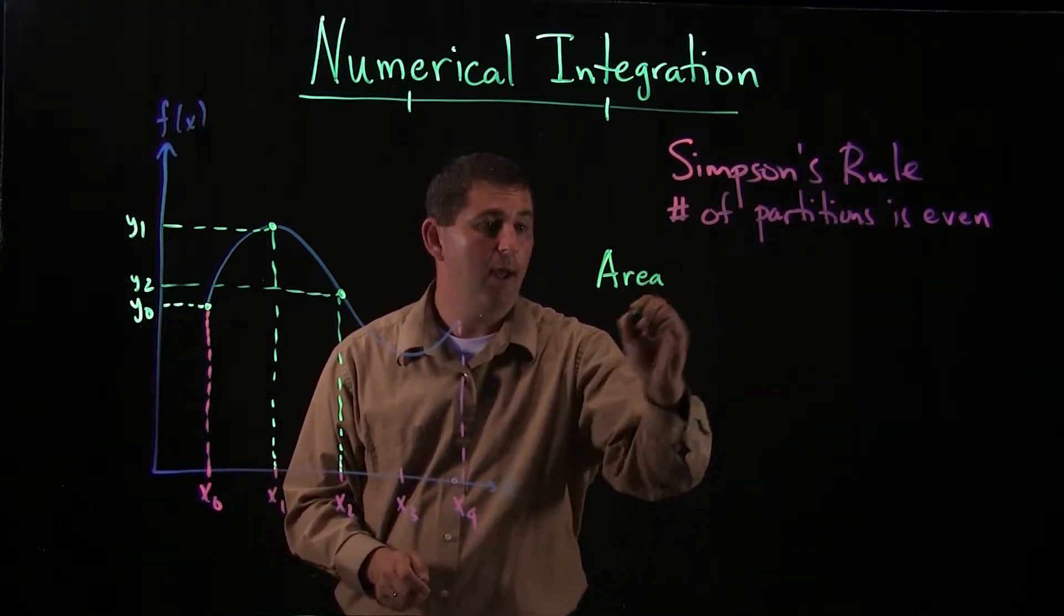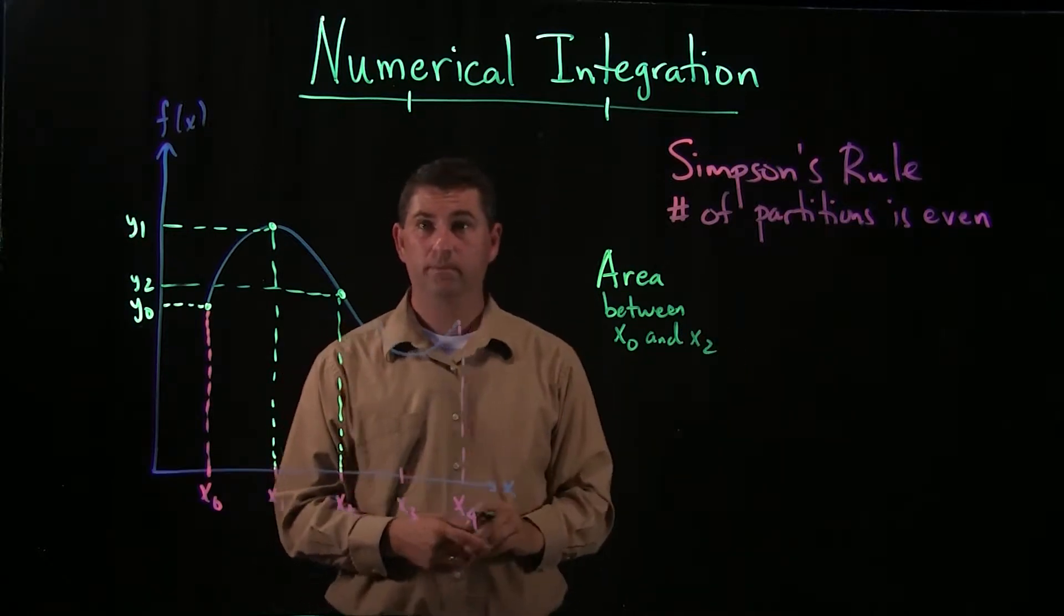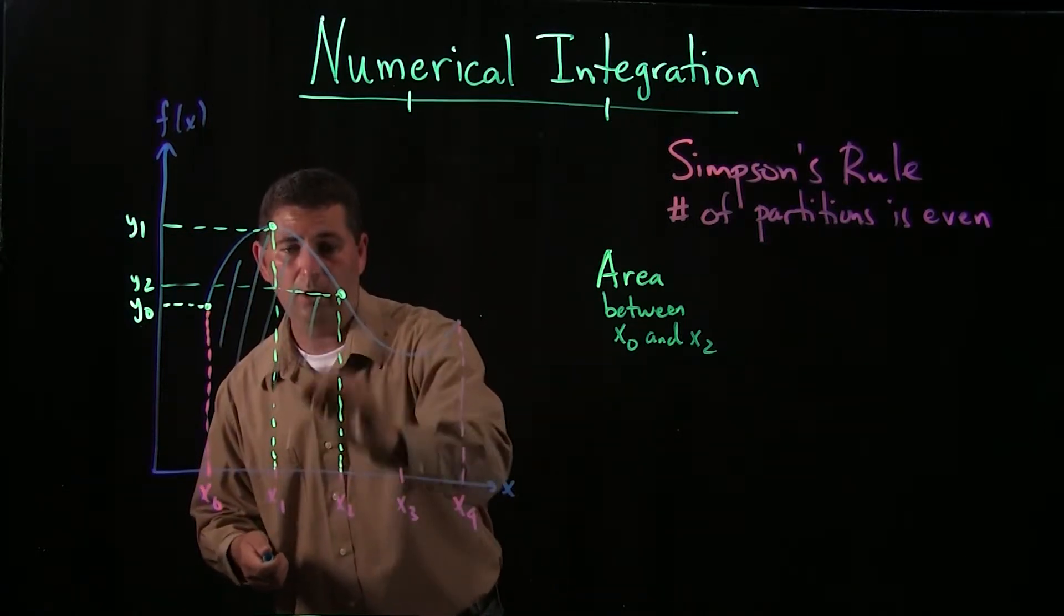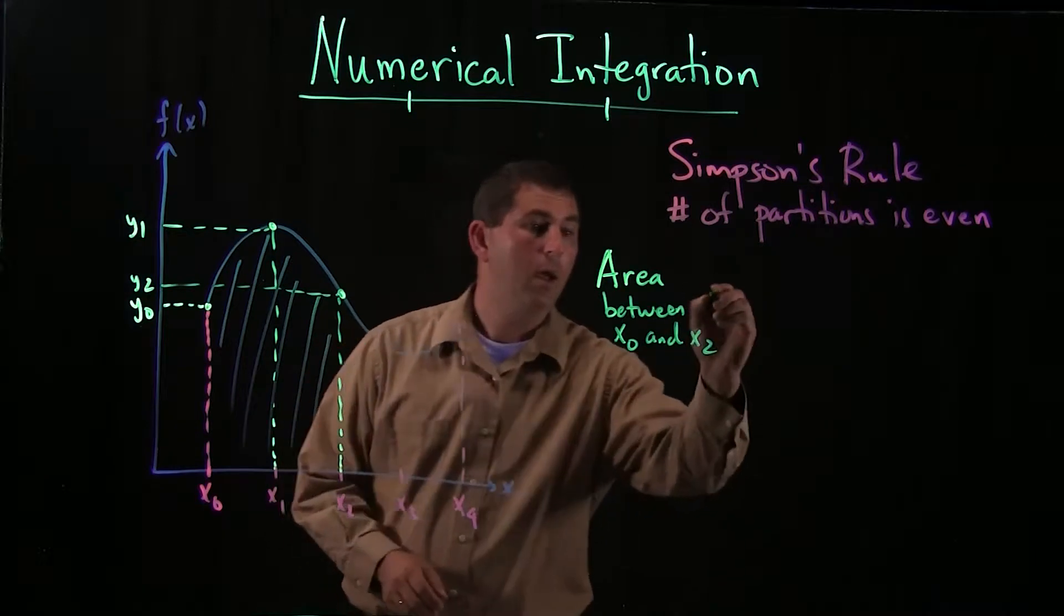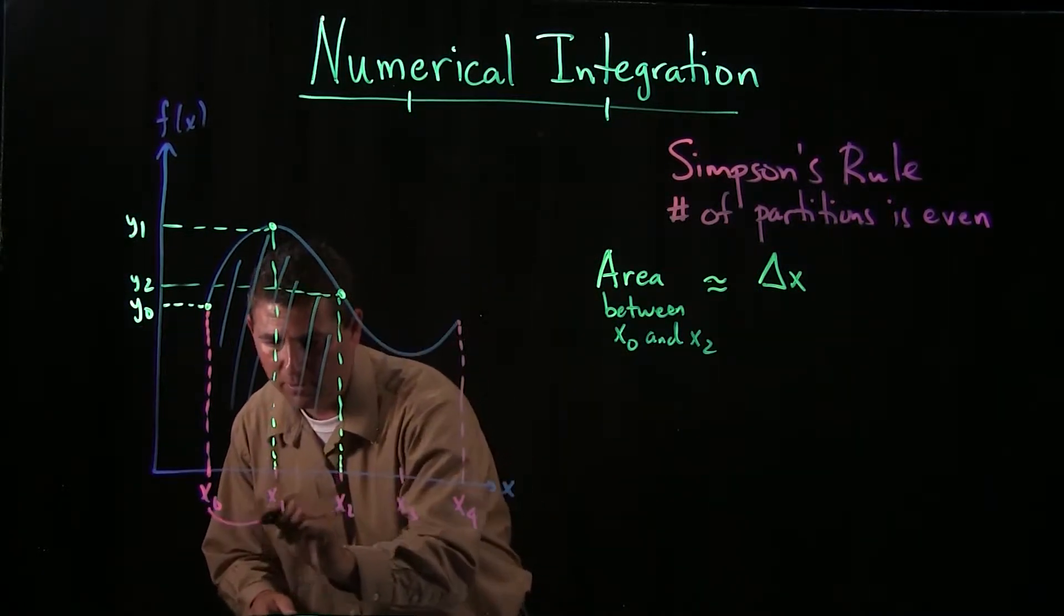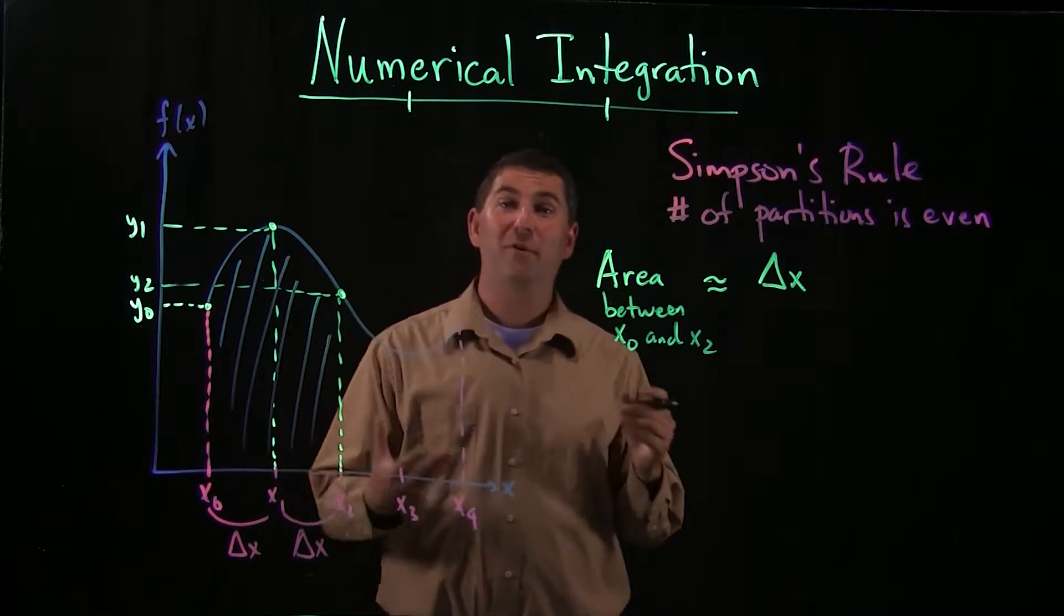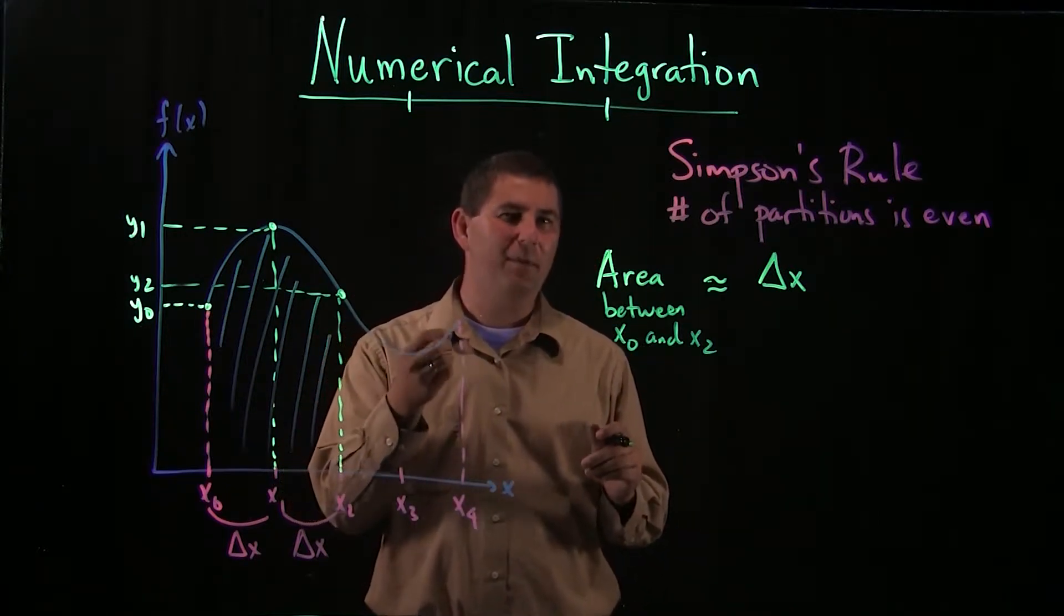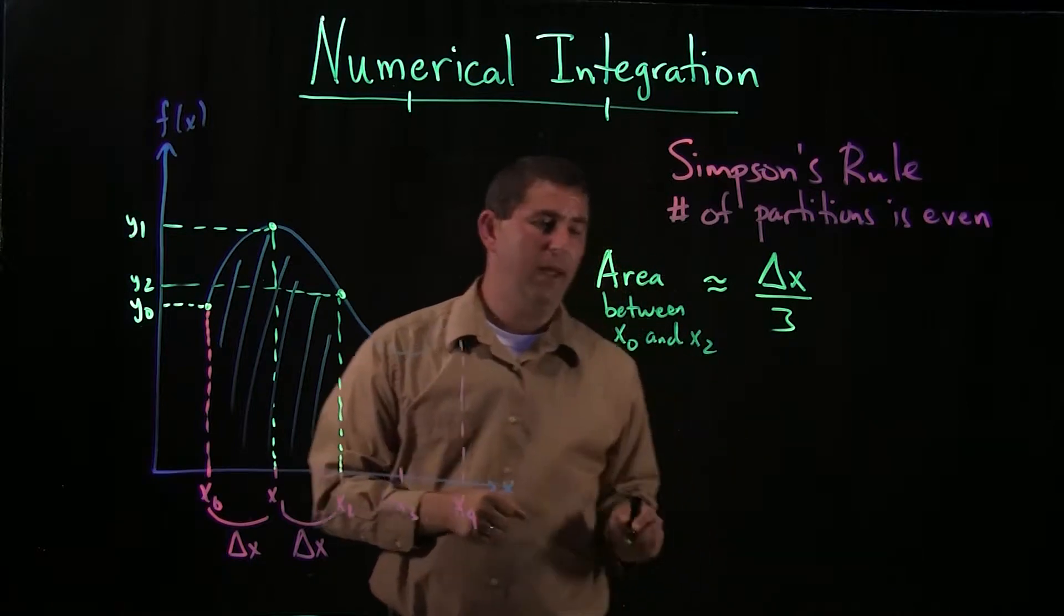So let's write it down here as the area between x0 and x2. So I just want this area right here. I'm not worried about the area on the other side. So I'm just looking at that area there. So it turns out that we can get this area, or at least an approximation, by looking at our delta x, which this is actually the same as before. So there's our delta x, same thing from x1 to x2. There's our delta x.